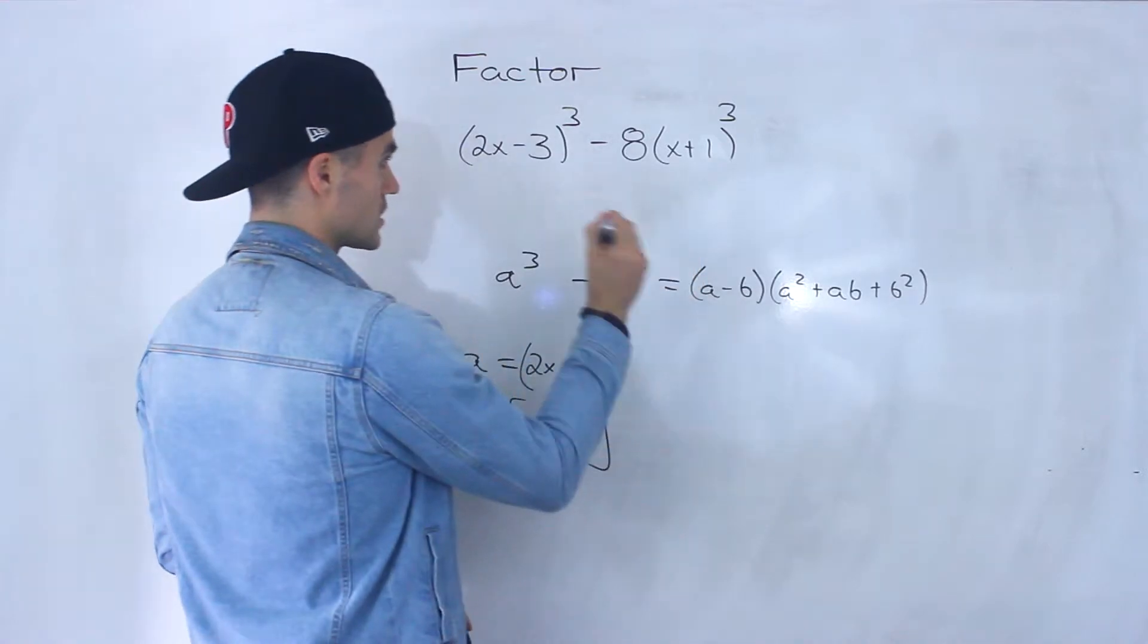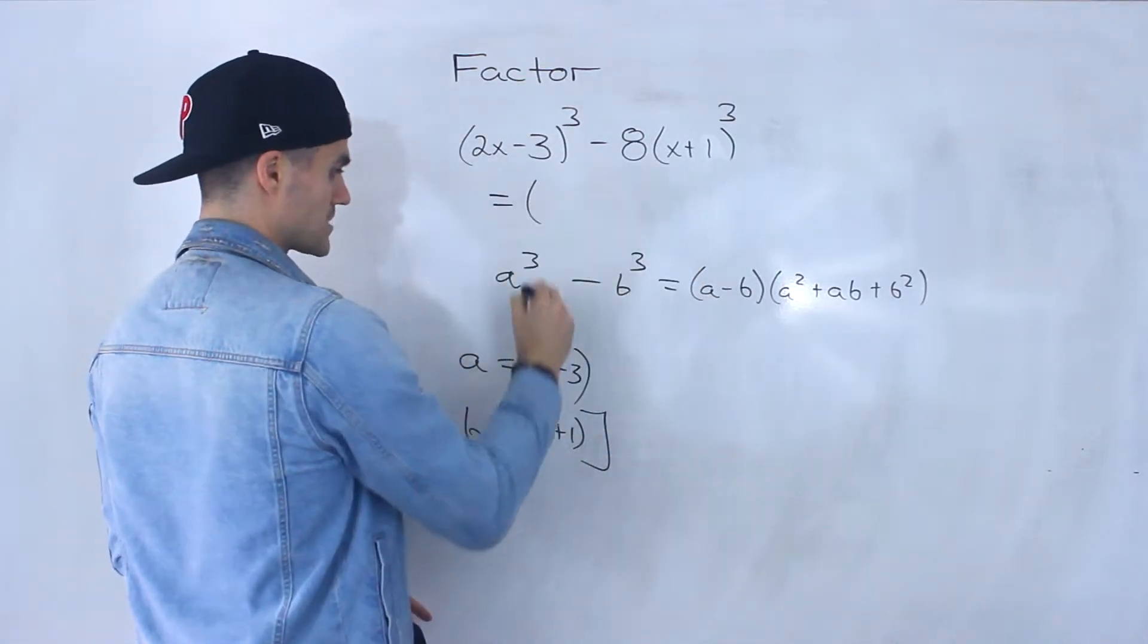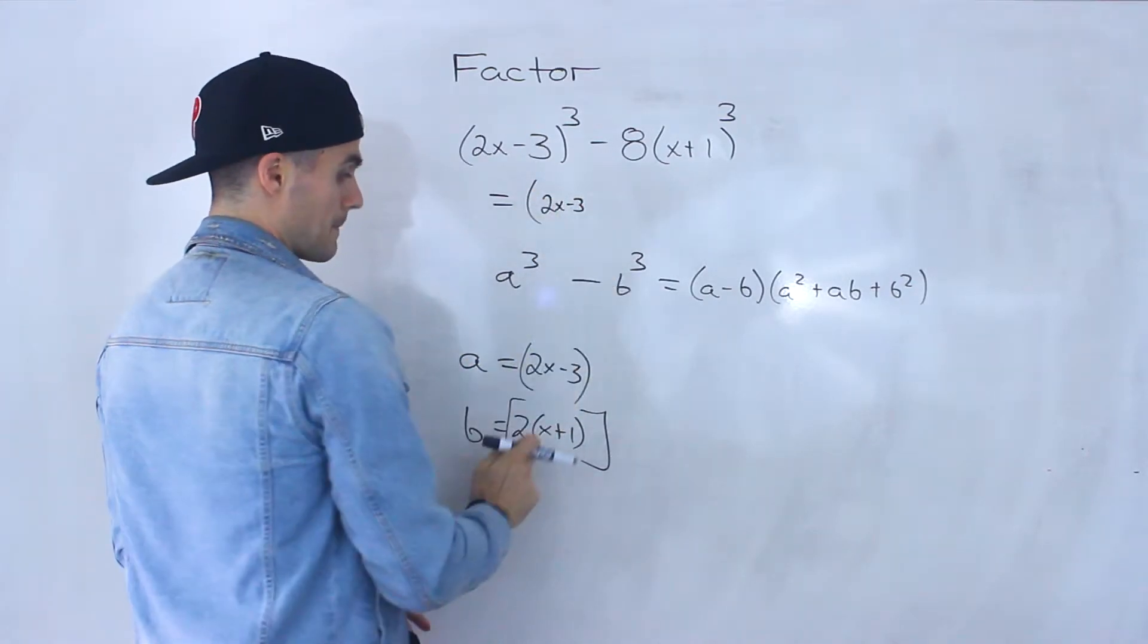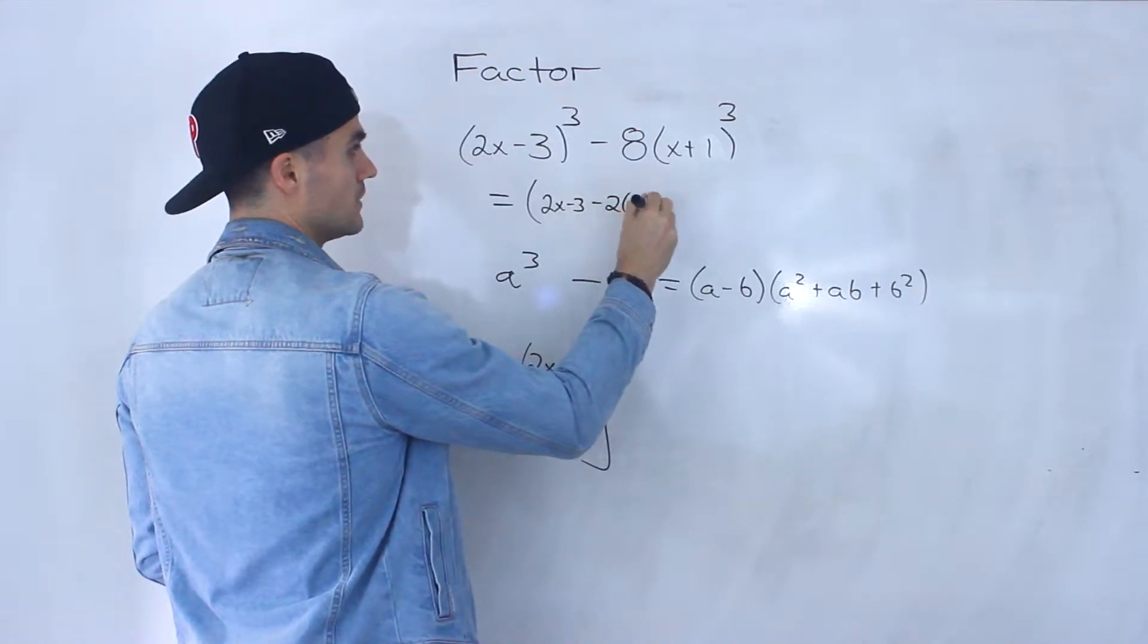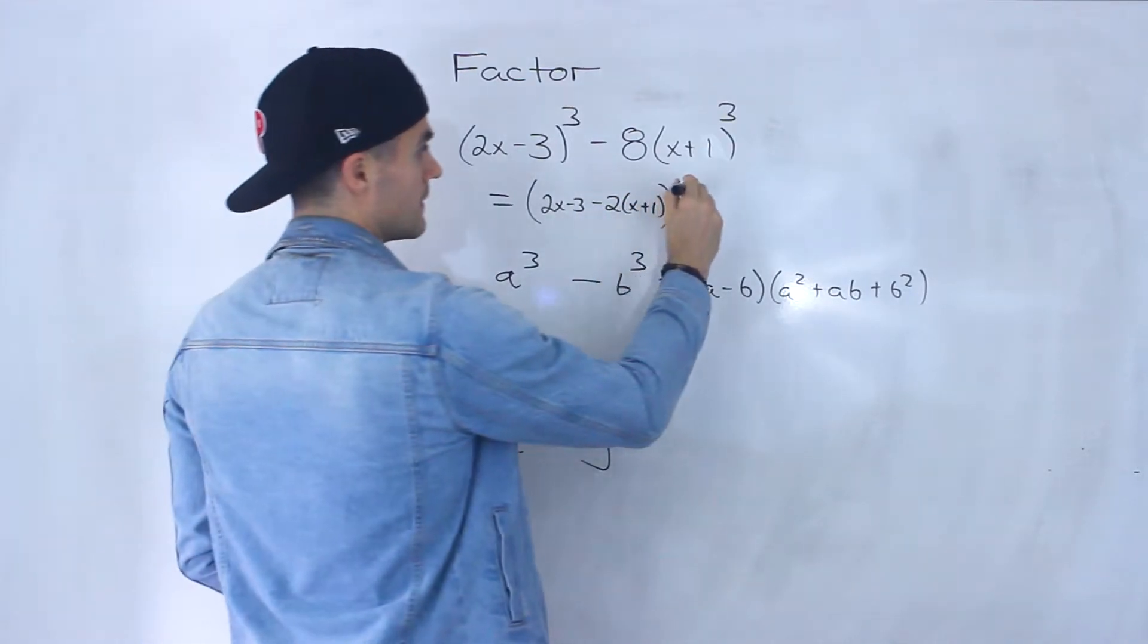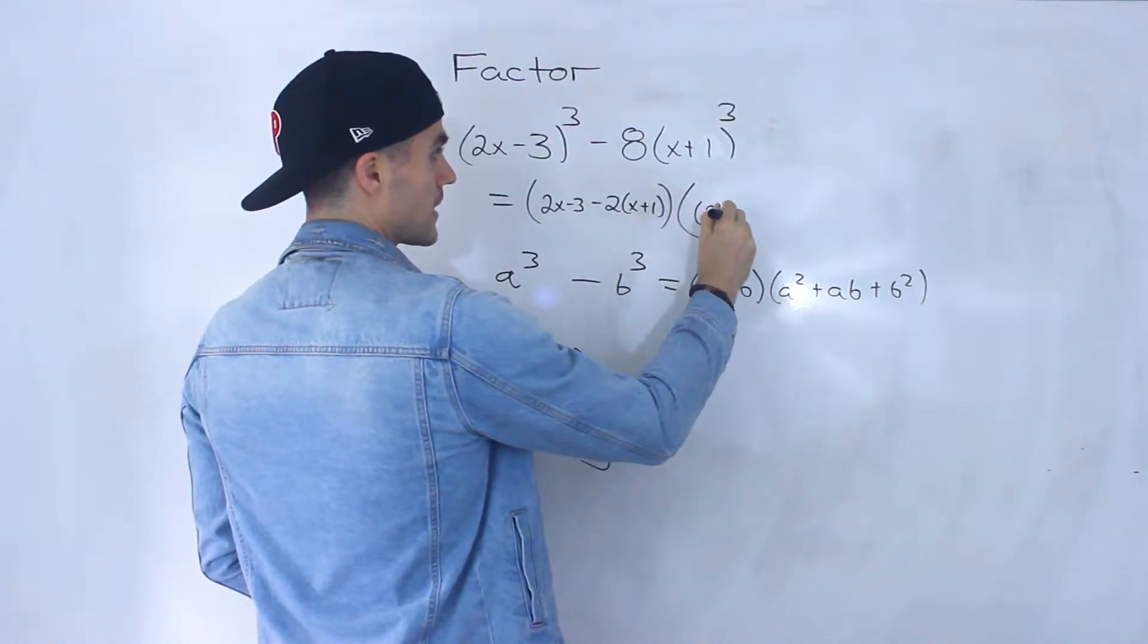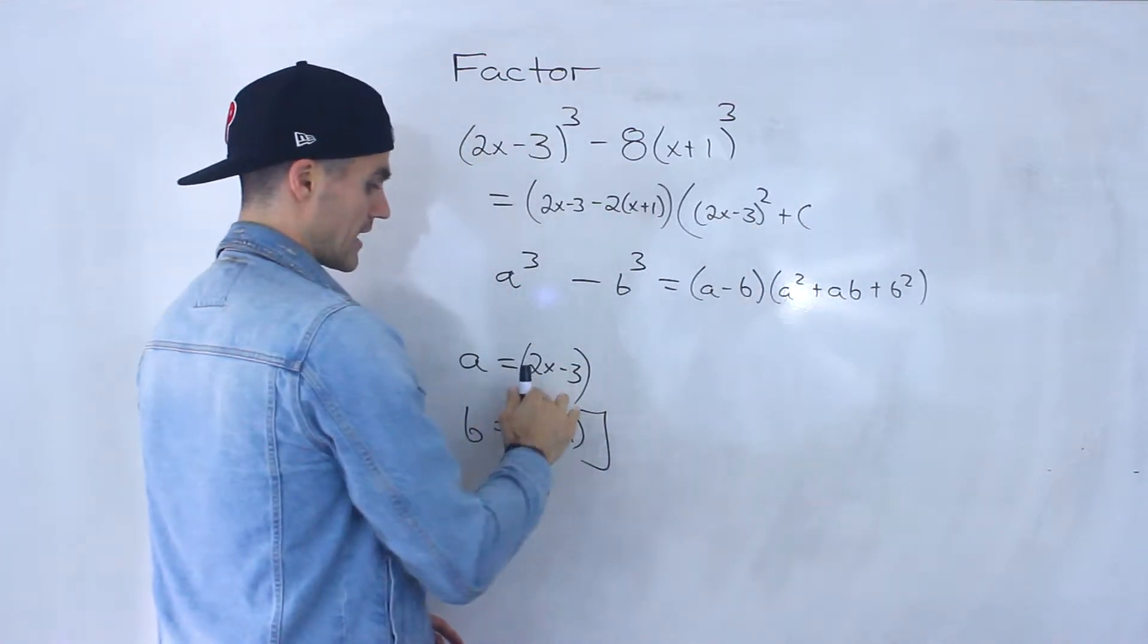So this here would equal, I'm actually going to give myself some room here. So we'd have a minus b, so we'd have 2x-3 minus this expression. So minus 2(x+1), like that. And then we'd have a squared, so we'd have (2x-3)² plus a times b.